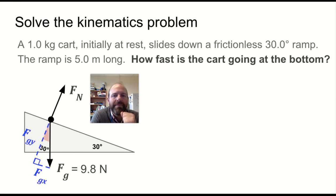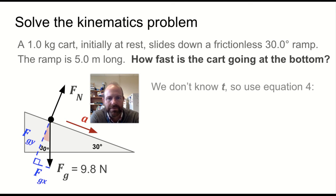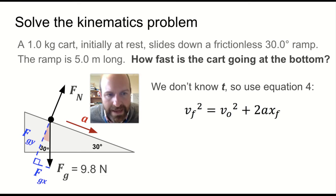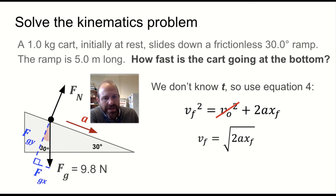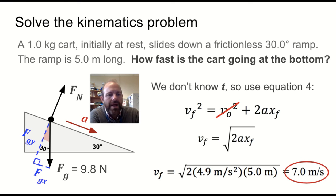Now we can solve the kinematics problem. How fast is the cart going at the bottom? Well, if the ramp is 5 meters long, the acceleration is down the ramp, we don't know t, so we're going to use our fourth equation, v final squared is v initial squared plus 2a delta x, but in this case we'll call initial x 0. The initial velocity is also 0. The final velocity then is the square root of 2a distance traveled, and we get about 7 meters per second.